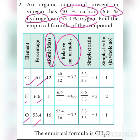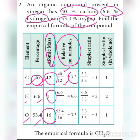The atomic mass of carbon is 12, hydrogen is 1, and oxygen is 16. To calculate the relative number of moles, divide the percentage by the atomic mass. For carbon: 40 divided by 12 equals 3.3.